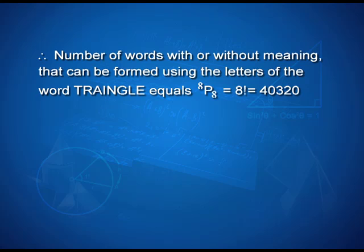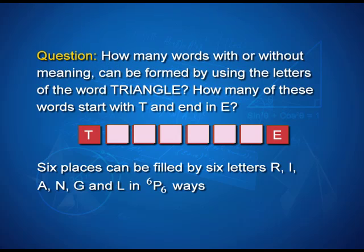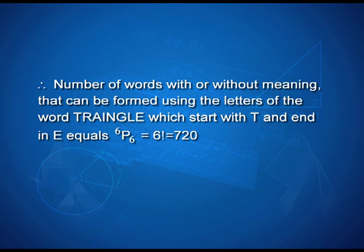So 40,320 words can be formed from the letters of TRIANGLE. The second part asks: how many of these words start with T and end in E? Now there is a condition — the first place must be T and the last must be E, so that arrangement is fixed. Only the 6 places between T and E need to be arranged using the remaining 6 letters, which can be done in 6P6 = 6! = 720 ways.